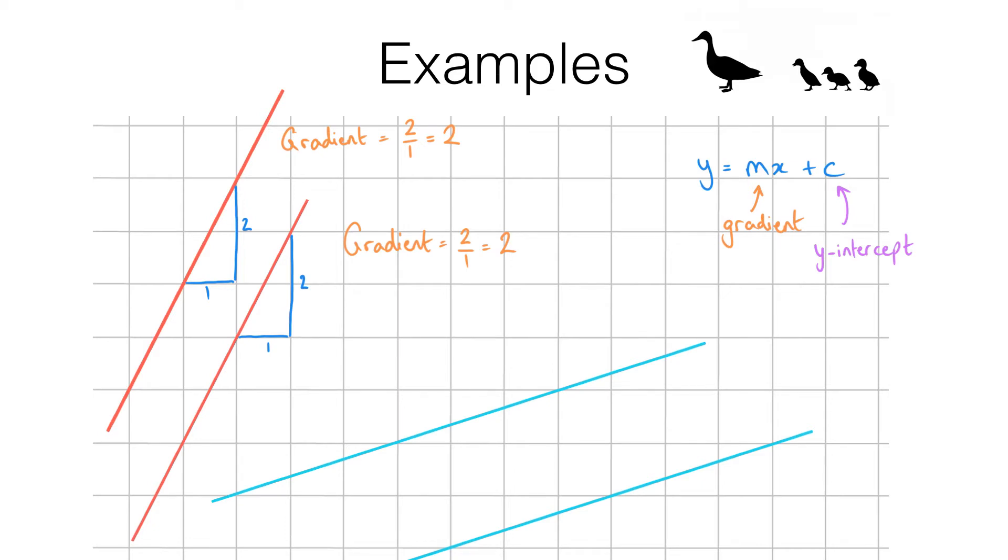Now what that really means is that for every one step we go across from the line we need to go a third of a step up to get back onto the line. Now that's quite hard to see on this diagram like that but what you can realize is that for every three steps we go across we go one step up to get back on the line.